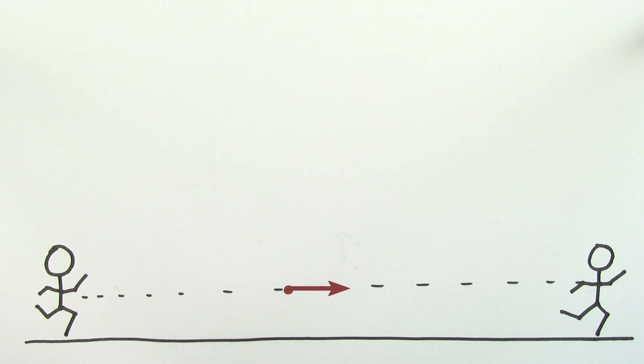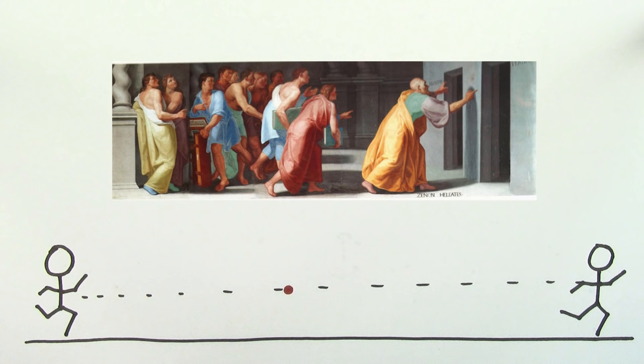In fact, since defining motion at a particular point in time seemed impossible, it made some ancient Greeks question whether motion had any meaning at all. They wondered whether motion was just an illusion.